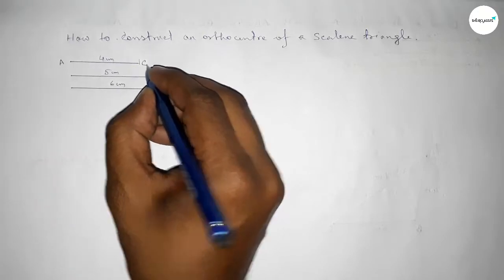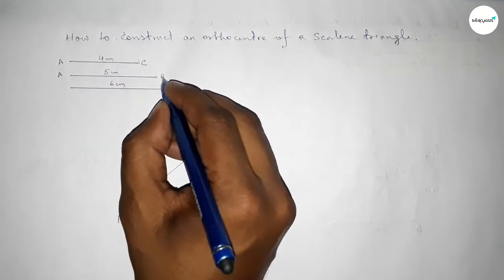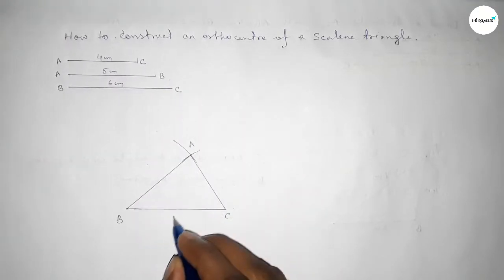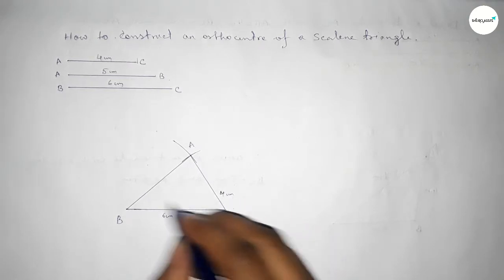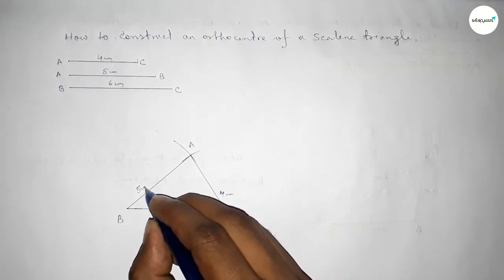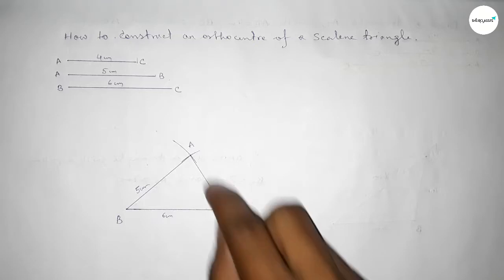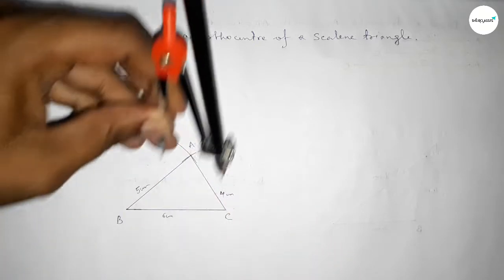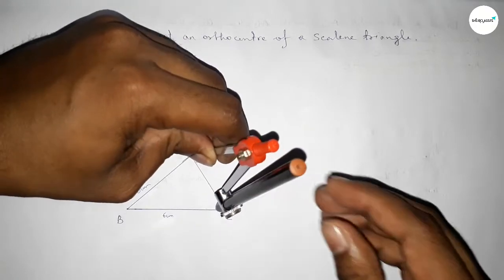Now joining A and C, then joining A and B. So this is AC, this one AB, and this one BC. BC is six centimeters, AB is four centimeters, and AC is five centimeters. Now we have to draw a perpendicular line from point A to BC.